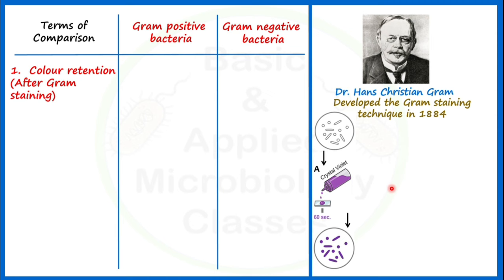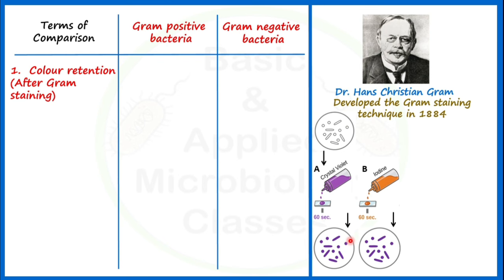In the second step, we will be adding iodine. Iodine here acts as a mordant. Iodine forms an insoluble complex with the crystal violet which has already been retained by the bacterial cells in step one.